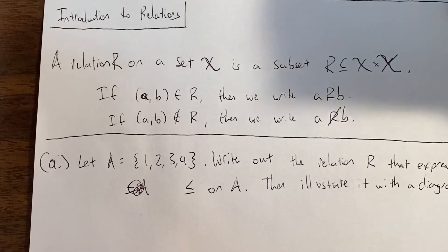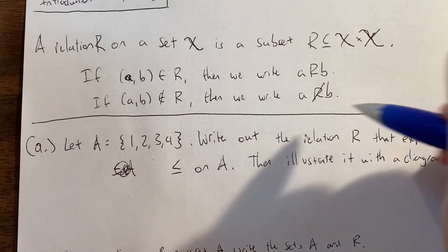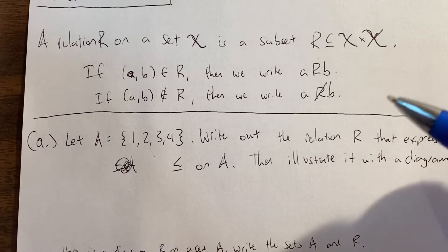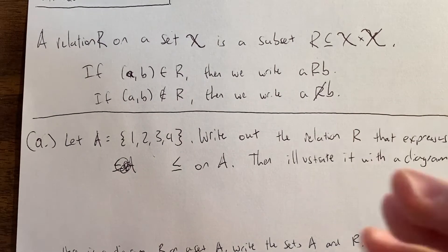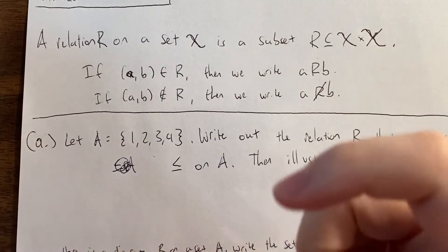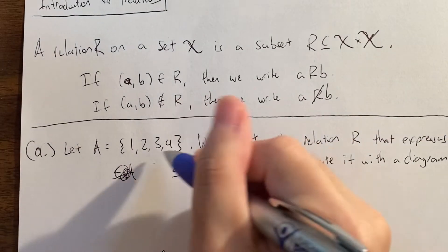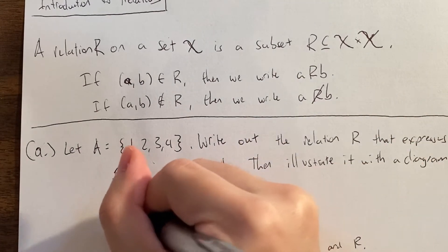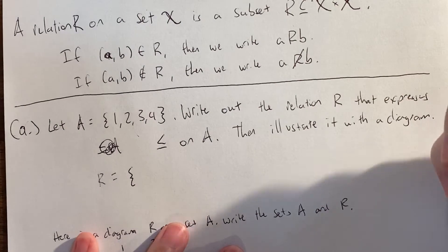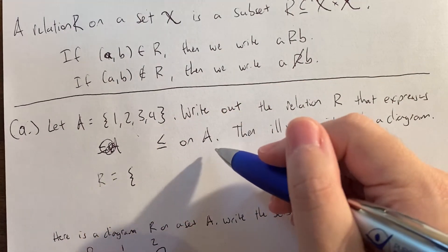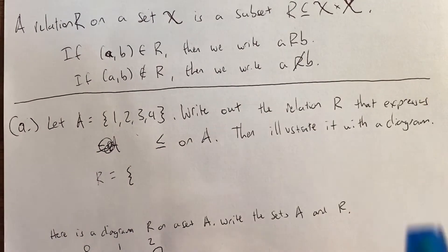Let's deal with more concrete examples using smaller sets. We'll start with the set A = {1, 2, 3, 4}. We're going to write out the relation R on A and then draw a picture. We'll draw an arrow if (A, B) is in the relation — the arrow will go from A to B. The direction of the arrow matters because sometimes the relation is not symmetric. R will consist of coordinate pairs where both coordinates are in A, and a pair is an element of R if X R Y holds for the relation.